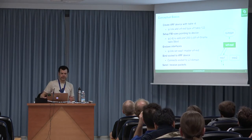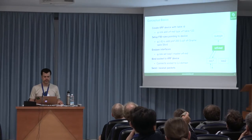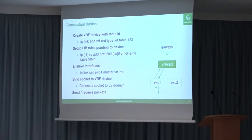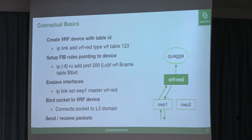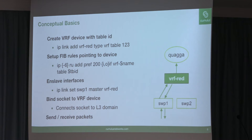Conceptually, the basics are: create a device, which gets associated with a table. You set up your FIB rules, which during route lookup say this is a master device — I need to go to this table ID to do my lookup. With that created, you enslave a device to it. From that point on, packets that come in on that enslaved device are redirected to the VRF device, so that when an application has a socket bound to it, the packets will flow into it.